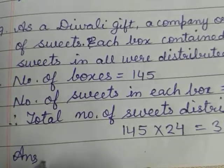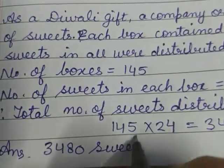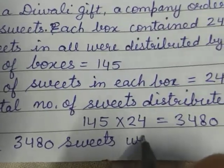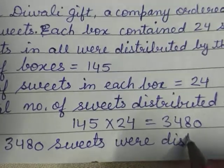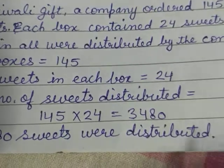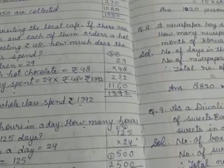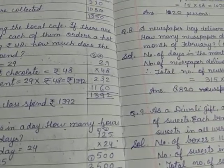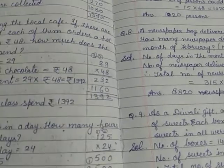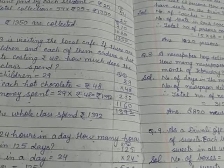Answer लिखेंगे: 3,480 sweets were distributed. Okay, तो यह हो गए questions 7, 8, 9. तो आज के लिए आपको यह 6 word problems copy करनी हैं — मैंने एक page पे 3 word problems की हैं. यह जरूरी नहीं है कि आप भी एक page पे 3 करोगे, आप एक page पे 2 भी कर सकते हो. तो यह work आज आप लोग complete कर लेंगे.